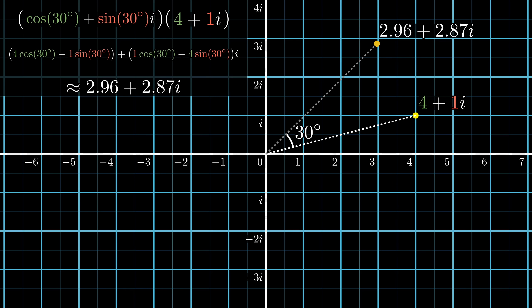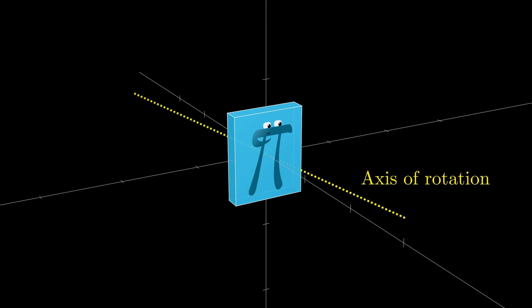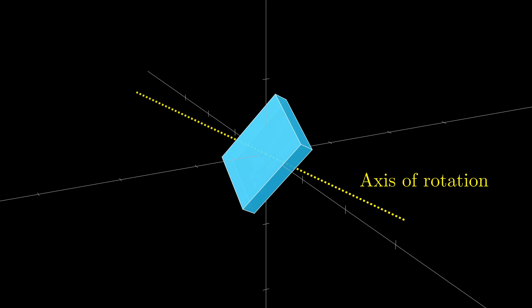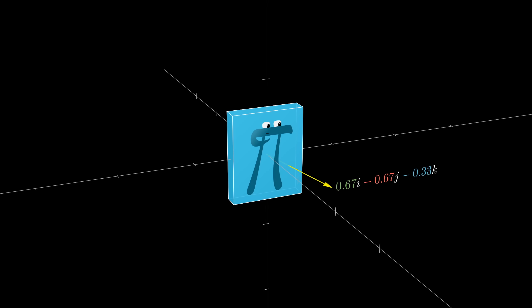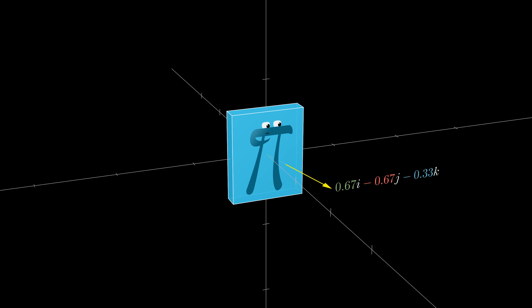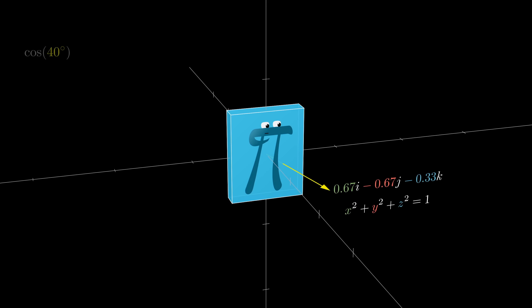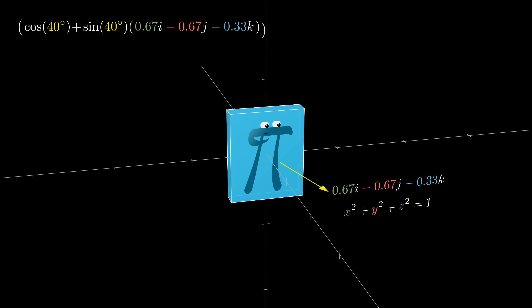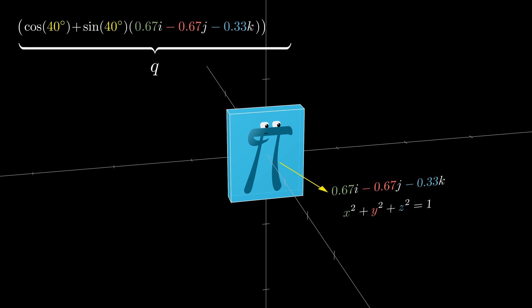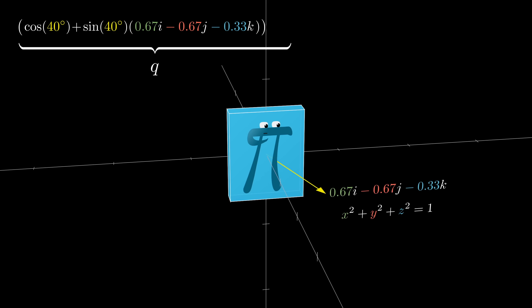Using quaternions to describe 3D rotations is similar, though the look and feel is slightly different. Let's say you want to rotate some angle about some axis. You first define that axis with a unit vector, which we'll write as having i, j, and k components, normalized so that the sum of the squares of those components is 1. Similar to the case of complex numbers, you use the angle to construct a quaternion by taking cosine of that angle as the real part plus sine of that angle times an imaginary part. Except this time, the imaginary part has three components, the coordinates of our axis of rotation.